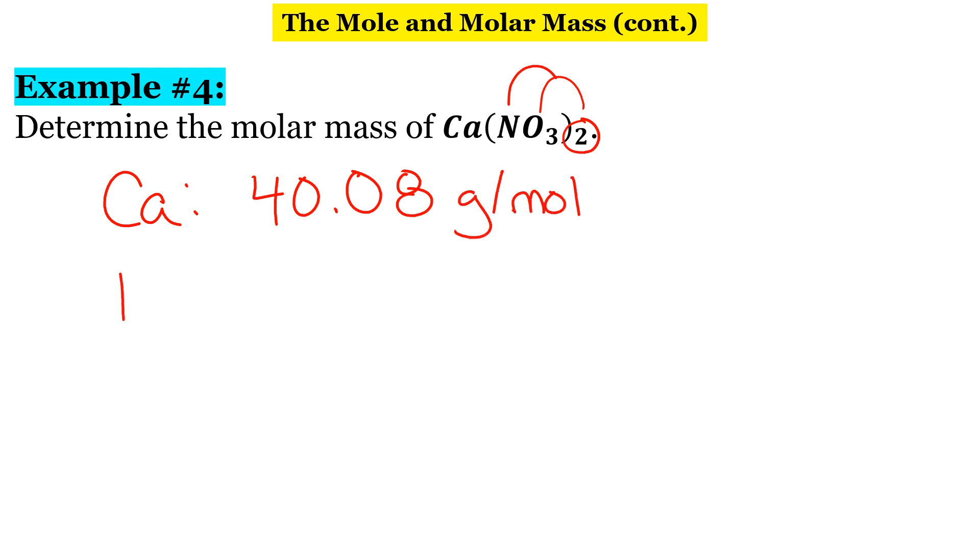Okay, then we have nitrogen. Nitrogen's molar mass, well, first of all, there's two of them coming from the two on the outside. Nitrogen's molar mass is 14.01 grams per mole.